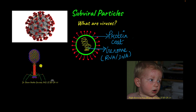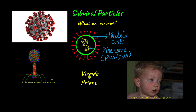What if I were to tell you that there are particles smaller than viruses that can still cause diseases? They are the sub-viral particles. So far, there have been two sub-viral particles identified: they are viroids and prions.